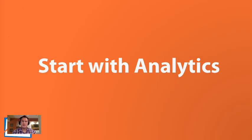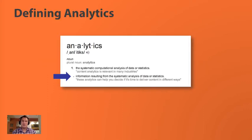For those of you who watched the first video, you can probably remember back to when we saw the definition of analytics that came right in a Google search result — that is basically the information resulting from the systematic analysis of data or statistics. In other words, that's basically just the information that we're using to tell a story from the data that we collect.